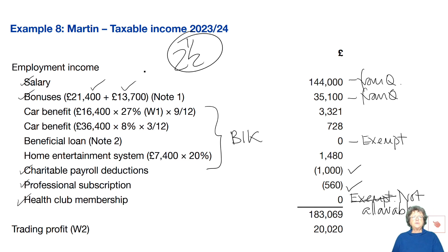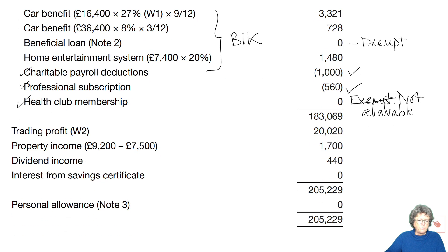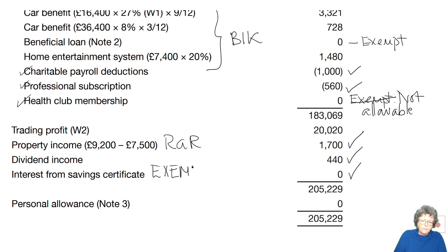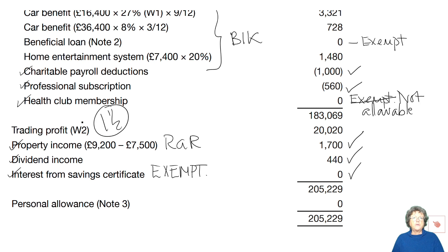Please set up your pro forma and copy the various bits in. The property income — rent-a-room — is also a copy-in. Dividends and the interest which we said was exempt — another one and a half marks. So we're up to around four marks before we even get any further.